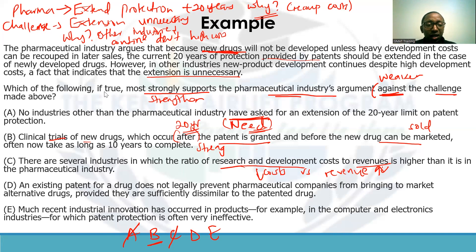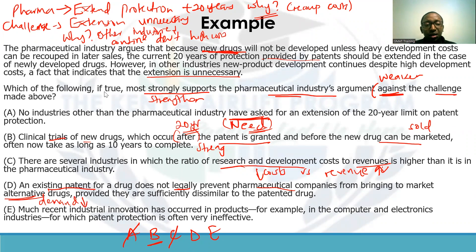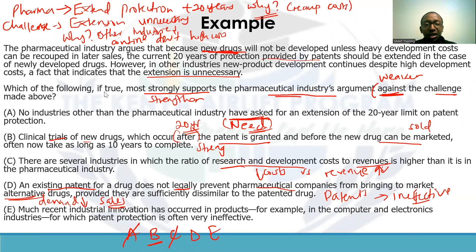Answer choice D: 'An existing patent for a drug does not legally prevent pharmaceutical companies from bringing to market alternative drugs, provided they are sufficiently similar to the patented drugs.' In short, even with a patent, other manufacturers can bring an alternative drug to market. This drives demand and sales down for the original drug, meaning the patents are effectively ineffective. If the patents themselves are ineffective, there's really no need to extend the length of that protection. This again does the opposite of what we want, so we can eliminate D.